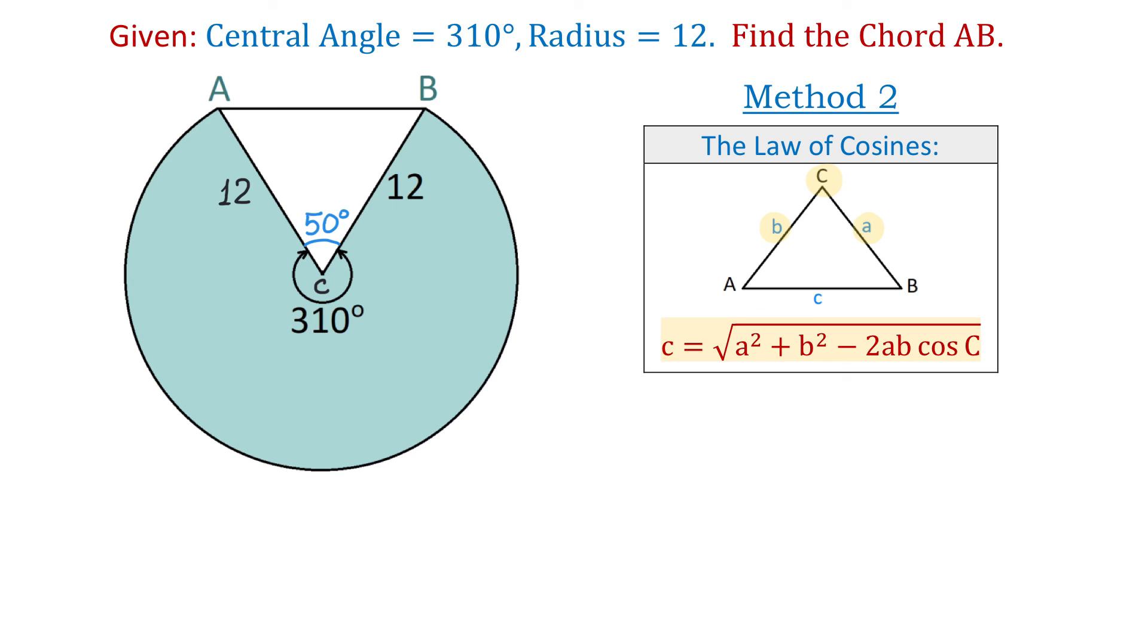So then AB equals square root of 12 squared plus 12 squared minus 2 times 12 times 12 and times cosine of 50 degrees.